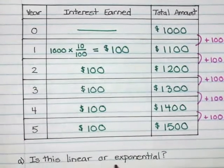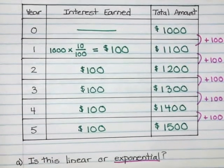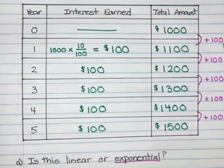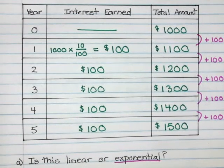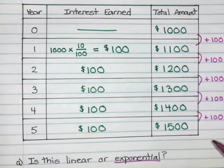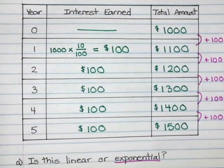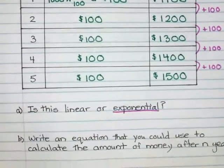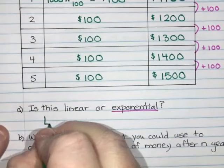Now we didn't get a chance in our previous unit to talk about what makes something exponential. If something is exponential, instead of adding the same number every time, we are multiplying by the same number every time. This one clearly we're adding $100. We will see some examples of other things where we do multiply every time to get our next number and then it will be exponential. But this one is definitely linear.